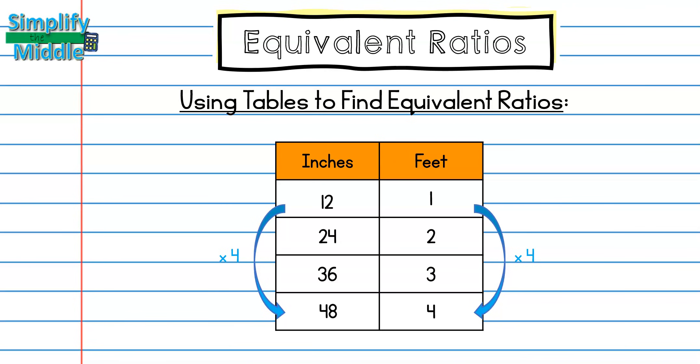Notice that all of these fractions will simplify to the same number. 24 halves will simplify to 12 over 1. 36 thirds will simplify to 12 over 1. And 48 fourths will simplify to 12 over 1. So once again, we just increased the number of groups that we had. And that is why all of these ratios are equivalent.